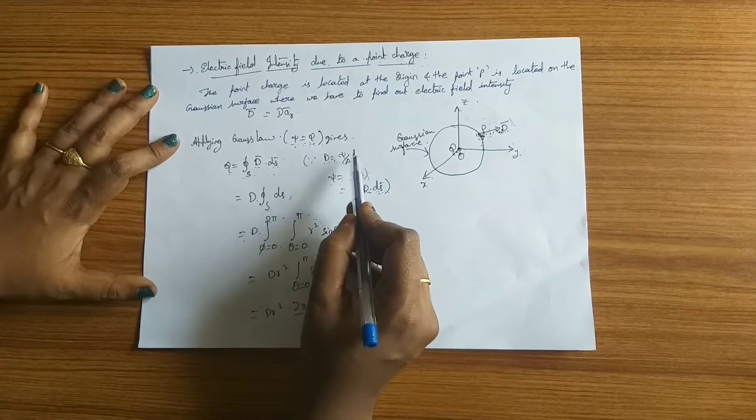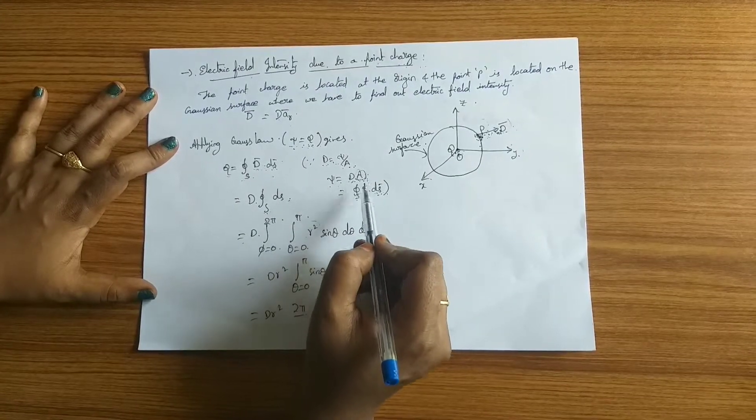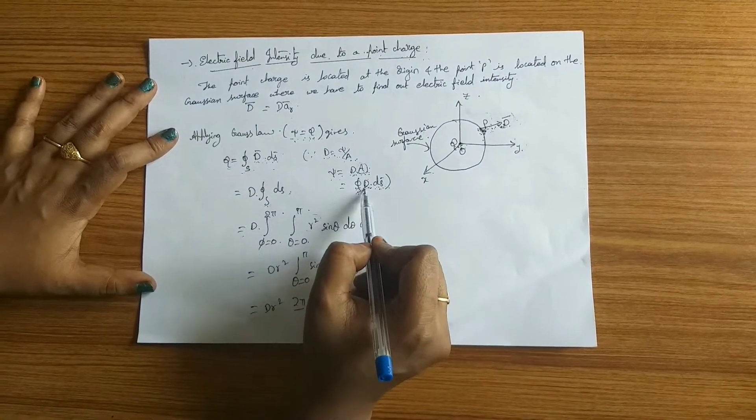We know this relation: ψ equals D into A, where area can be represented as a closed surface integral over D dot ds.